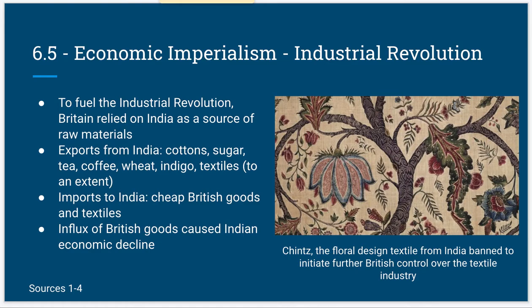India also proved to be an important market for goods manufactured in British factories. British goods began selling at greater quantities than Indian goods due to their inexpensive cost, specifically textiles. Specialized workers became less specialized and the industry declined as a result, and Indian textiles became irrelevant in relation to British textiles. Britain went to great lengths to keep their textile monopoly and banned shints, a popular Indian textile, from being imported to the mainland.